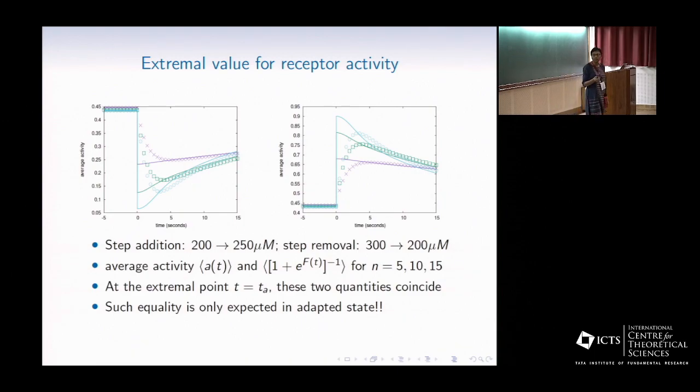So, first let me present the numerical data. Here, these discrete symbols show you the time variation of activity, and the continuous lines I have plotted this Boltzmann form of free energy. Now, as expected, before the stimulus is given, both these quantities were same. They were equal because the cell was adapted. They start differing as soon as you give the pulse.